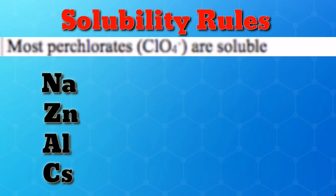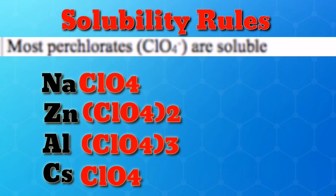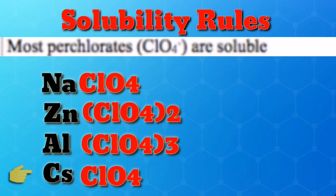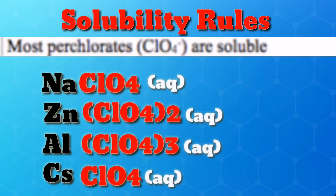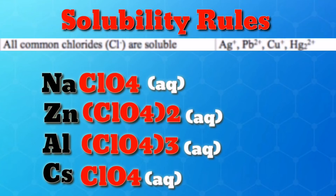Rule 4: All perchlorates are soluble. Again using the same metal cations but changing the anions to perchlorate, examples include: sodium perchlorate, zinc perchlorate, aluminum perchlorate, cesium perchlorate, and all other compounds containing perchlorate. All are soluble.